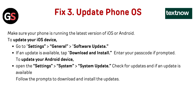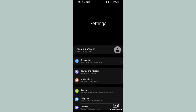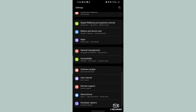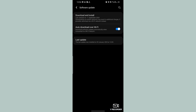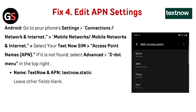Fix 3 — Update Your Phone's Operating System: Make sure your phone is running the latest version of iOS or Android. To update iOS: go to Settings → General → Software Update; if an update is available, tap Download and Install and enter your passcode if prompted. To update Android: go to Settings → System → System Update, check for updates, and follow the prompts to download and install.